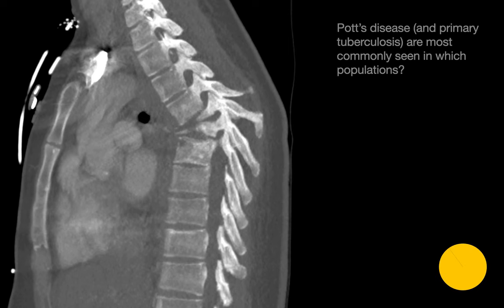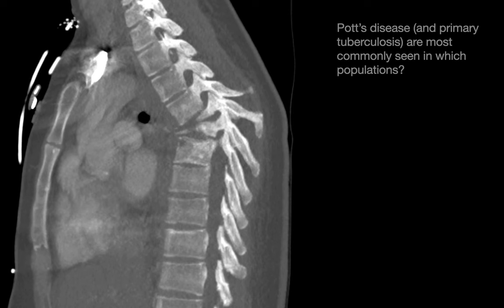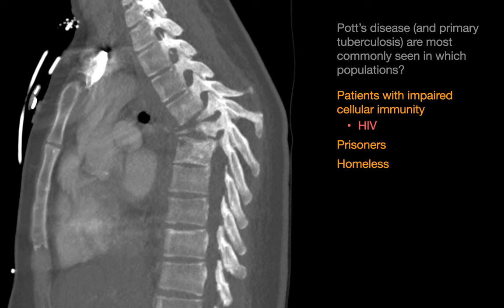In which populations is Pott's disease most often encountered? Common populations would include patients with impaired cellular immunity, such as HIV, prisoners, and the homeless.